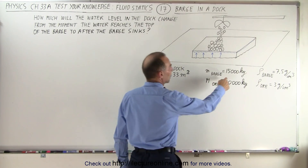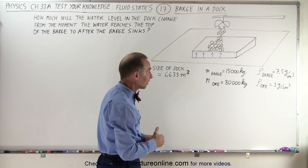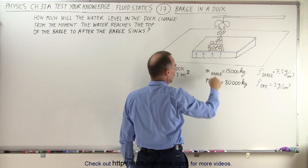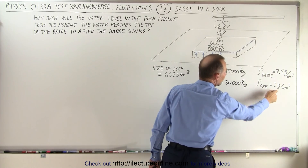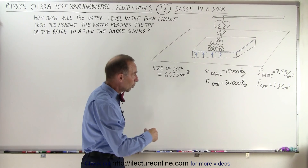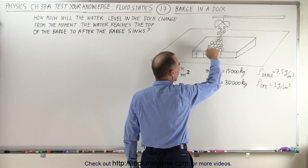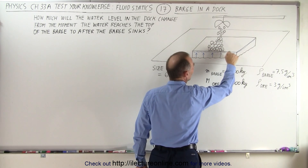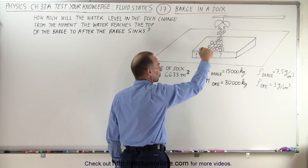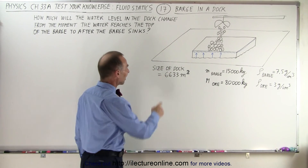We have a barge made out of a metal that has a density of 7.5 grams per cubic centimeter, which is 7,500 kilograms per cubic meter, total mass 15,000 kilograms, which is being loaded with ore and the density of the ore is 3 grams per cubic centimeter. When we continue to load the ore and reach a mass of 80,000 kilograms, the barge will sink further and further down until the water reaches the very top of the barge, and with just a little bit more ore the barge starts sinking as water seeps in and the barge sinks to the bottom of the dock.